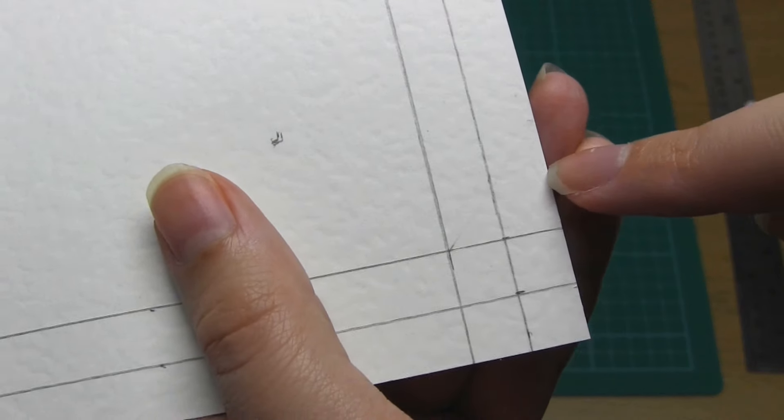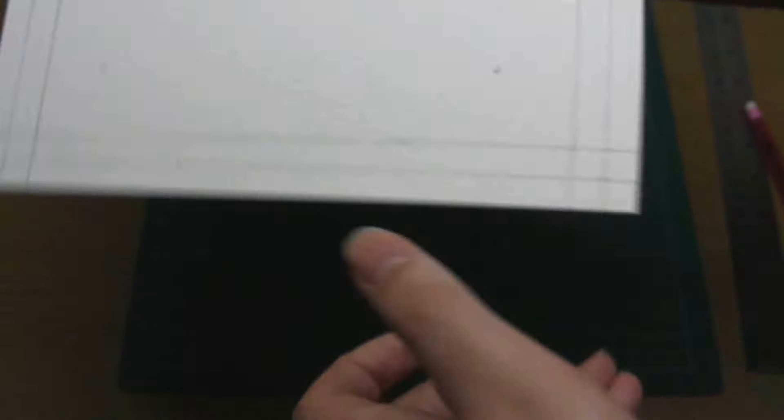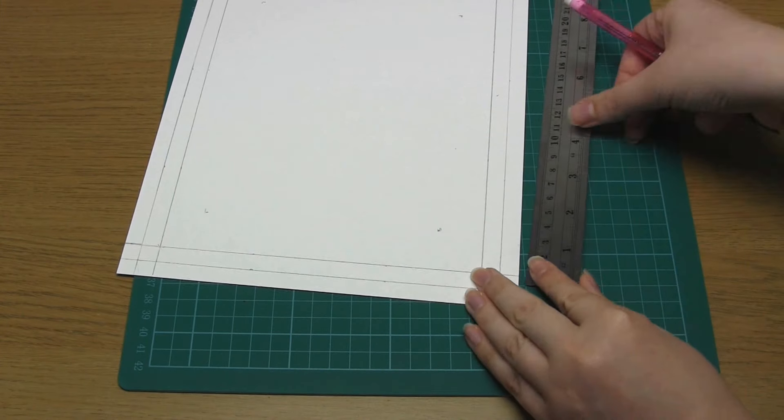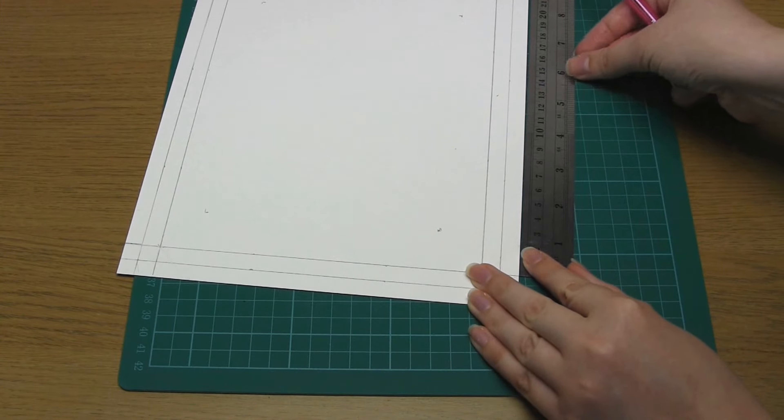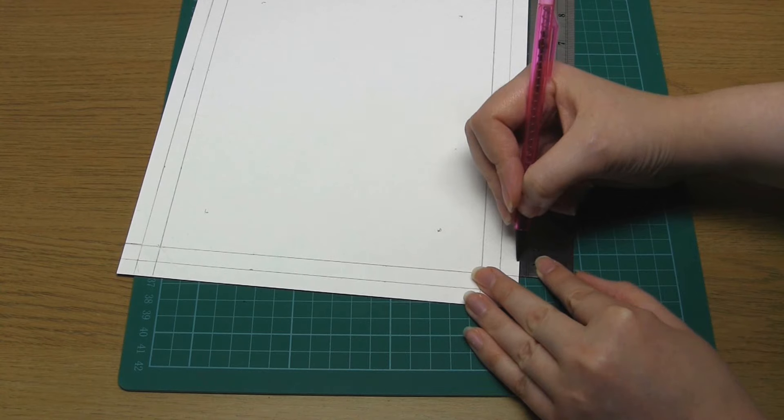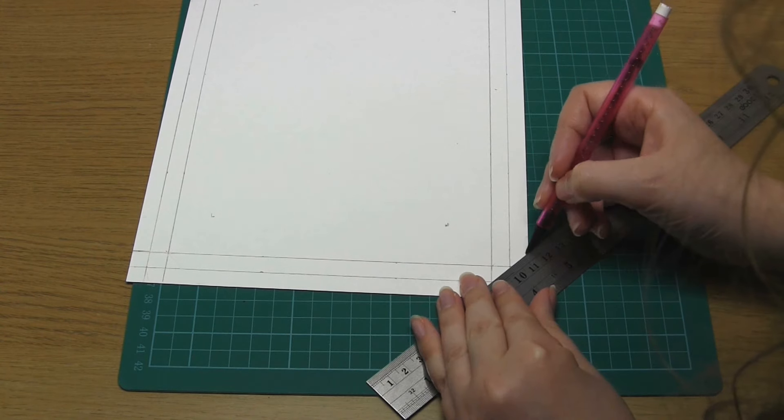At each corner, you'll see that you've got a square of pencil lines. You now need to measure one centimeter to the right of each of these corner squares, measuring along the card edge.